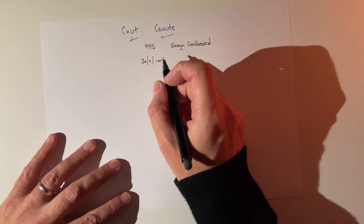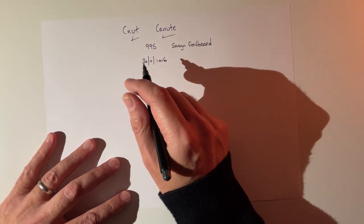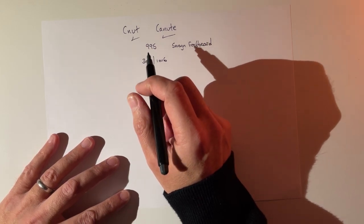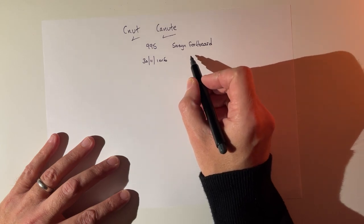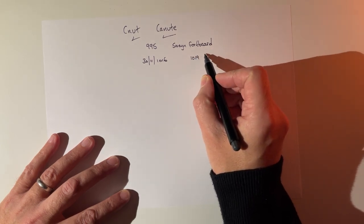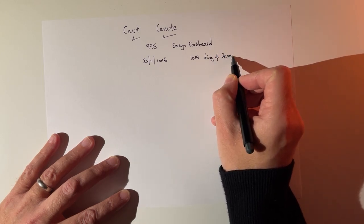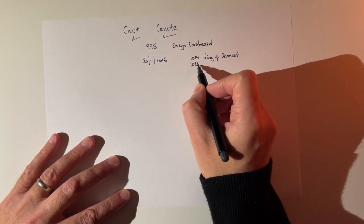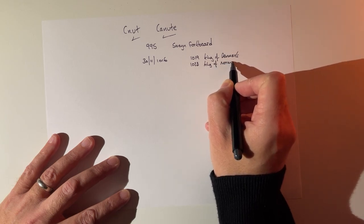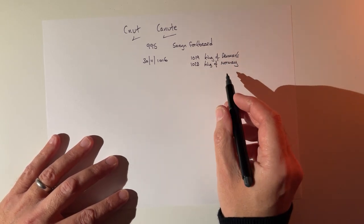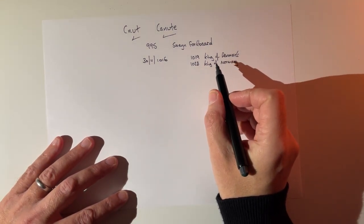Maybe he accidentally cut his own head off while shaving — that's a little joke from Blackadder. But anyway, Canute took over and became King of England. Later, in 1019, he also became King of Denmark, and in 1028, King of Norway, having beaten off other applicants, basically.